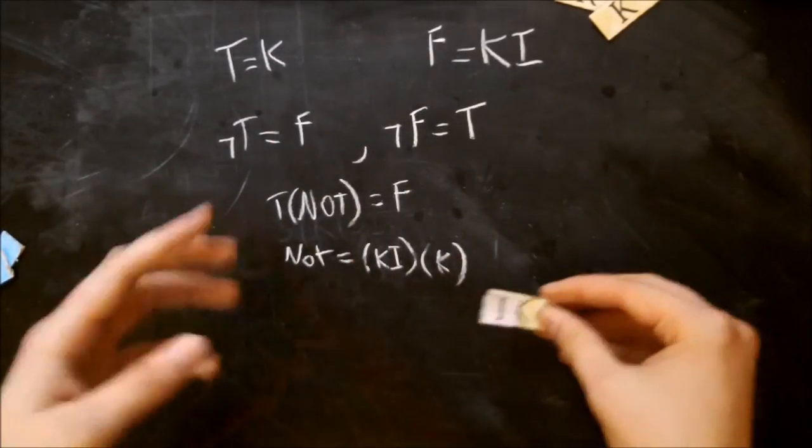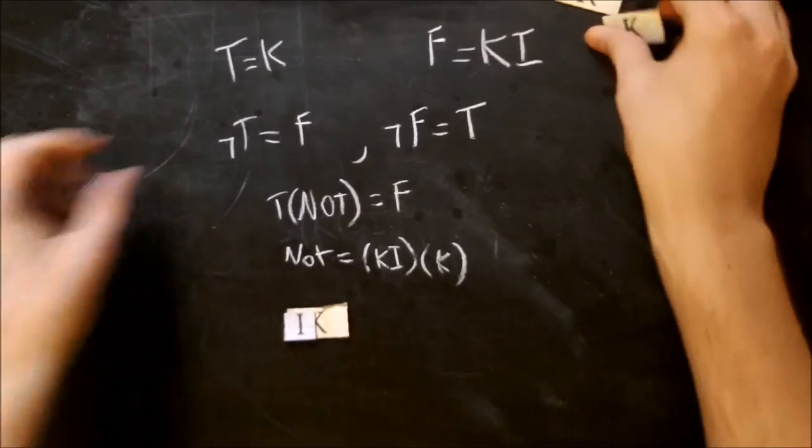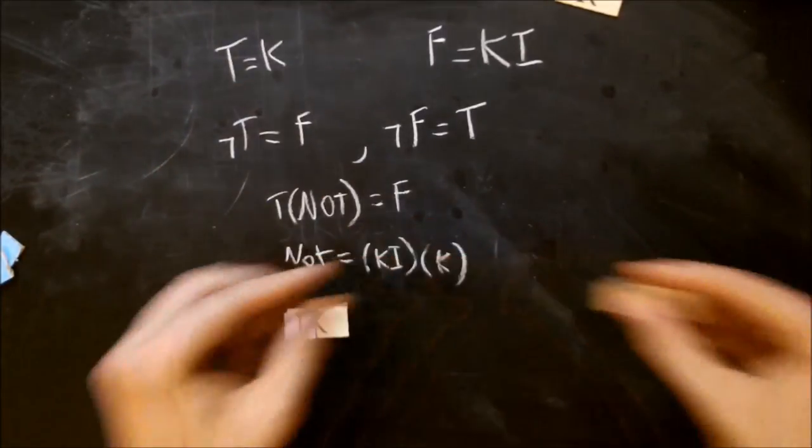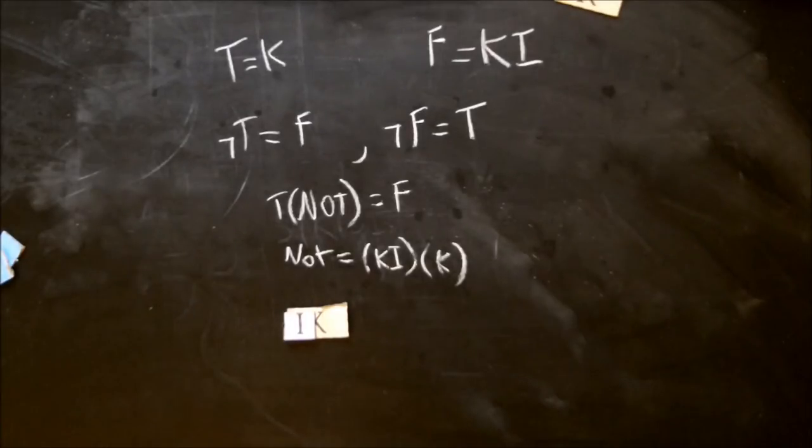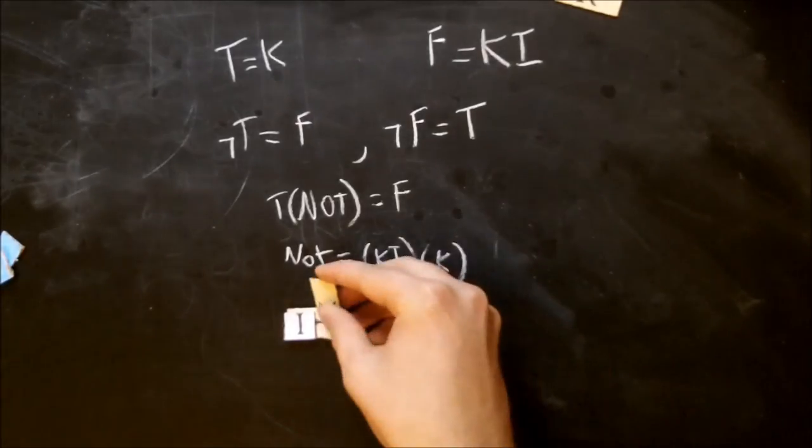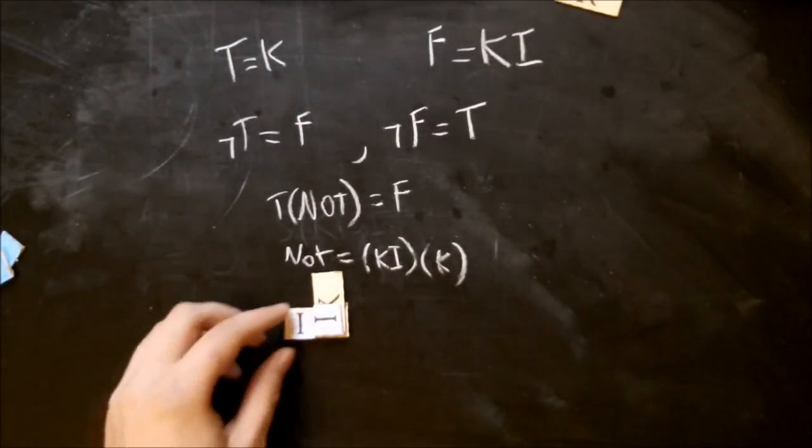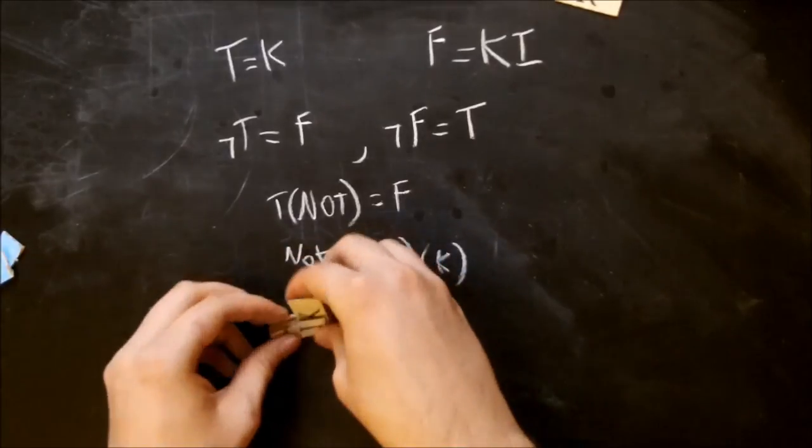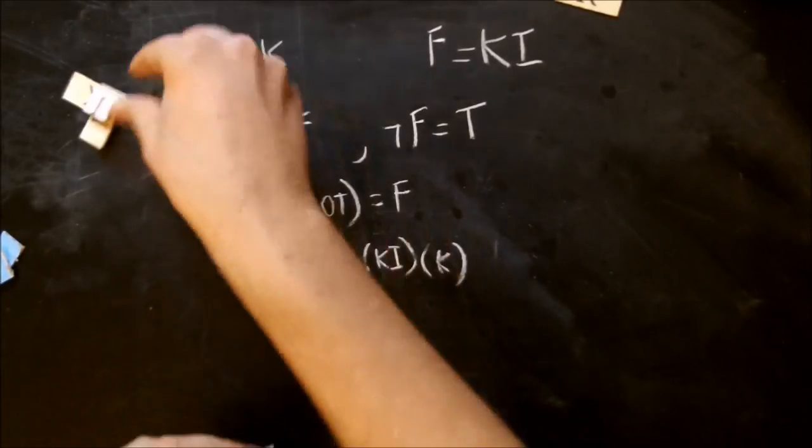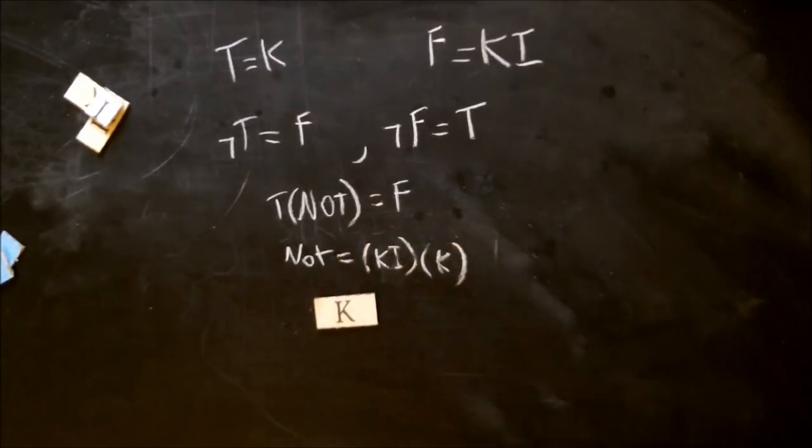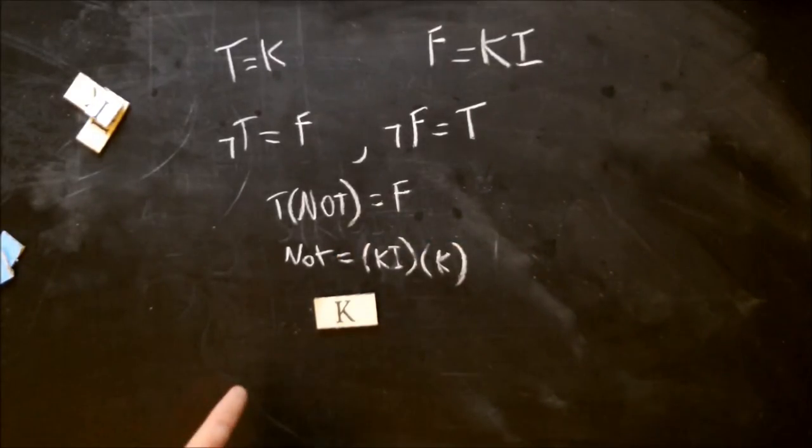And let's do not false. So I start with false, and I apply ki to it, so that means I just get the i out of here, then I apply k. So I'm left with k, so not false is true. Cool.